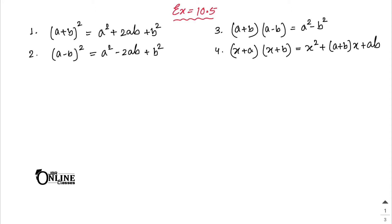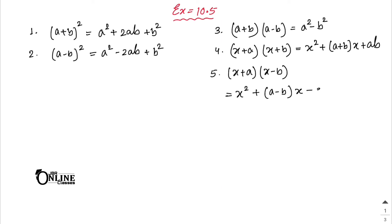If you have (x + a)(x - b), the formula will be x² + (a - b)x - ab. Now let's start Exercise 10.5, Sum number 1.